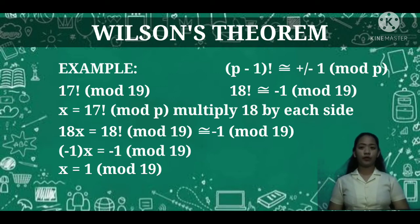Furthermore, we know that 18 ≅ -1. Then we will have -1x ≅ -1 (mod 19), which tells us that x ≅ 1 (mod 19).